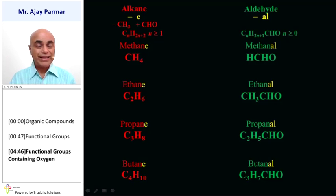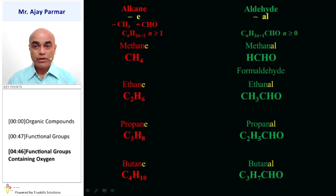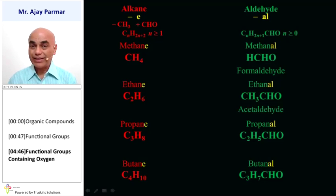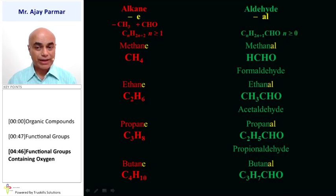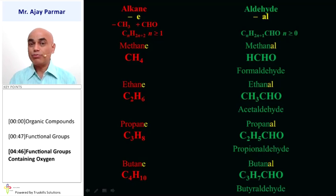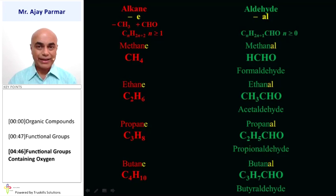The aldehydes also have common names. Methanal can only be called formaldehyde. Ethanal is also known as acetaldehyde. Propanal is propionaldehyde, whereas butanal is butyraldehyde. These are some of the other names of the aldehyde group.